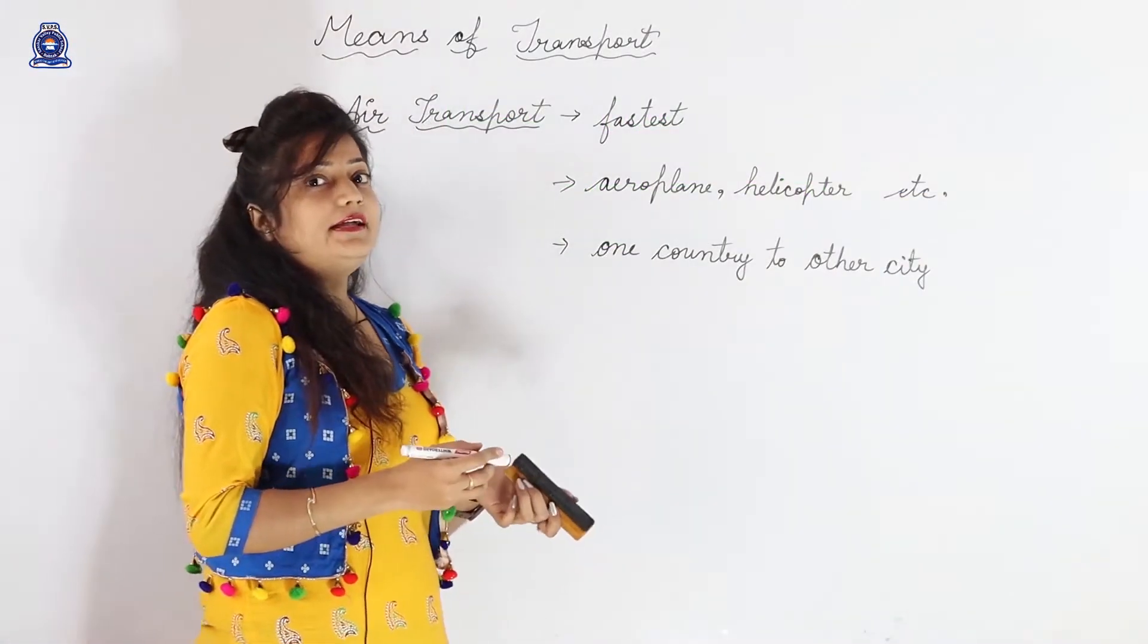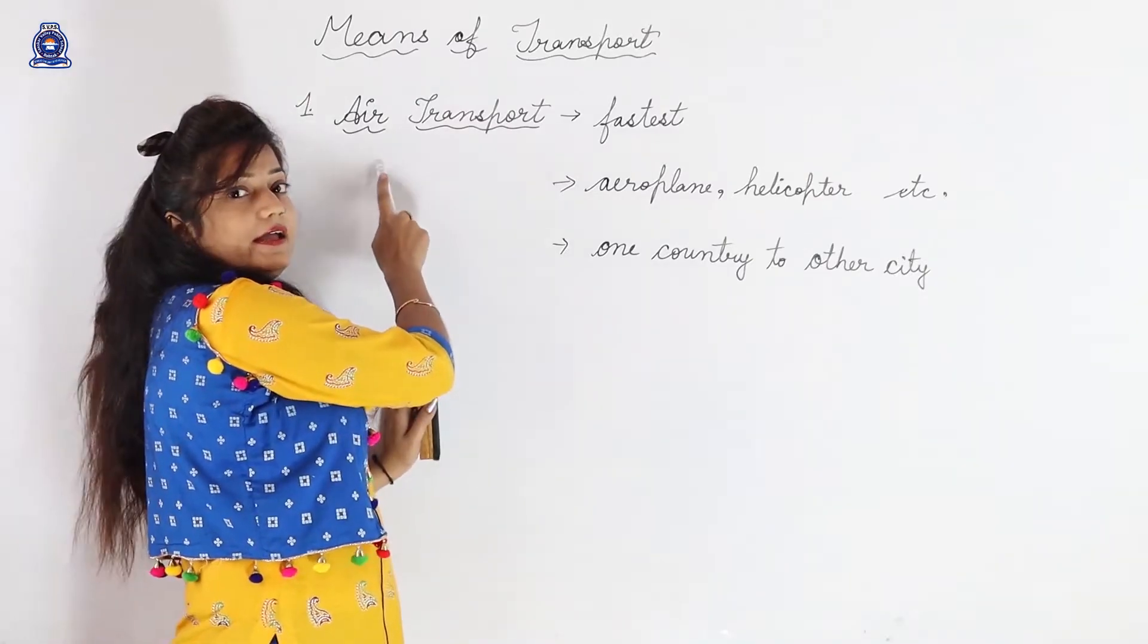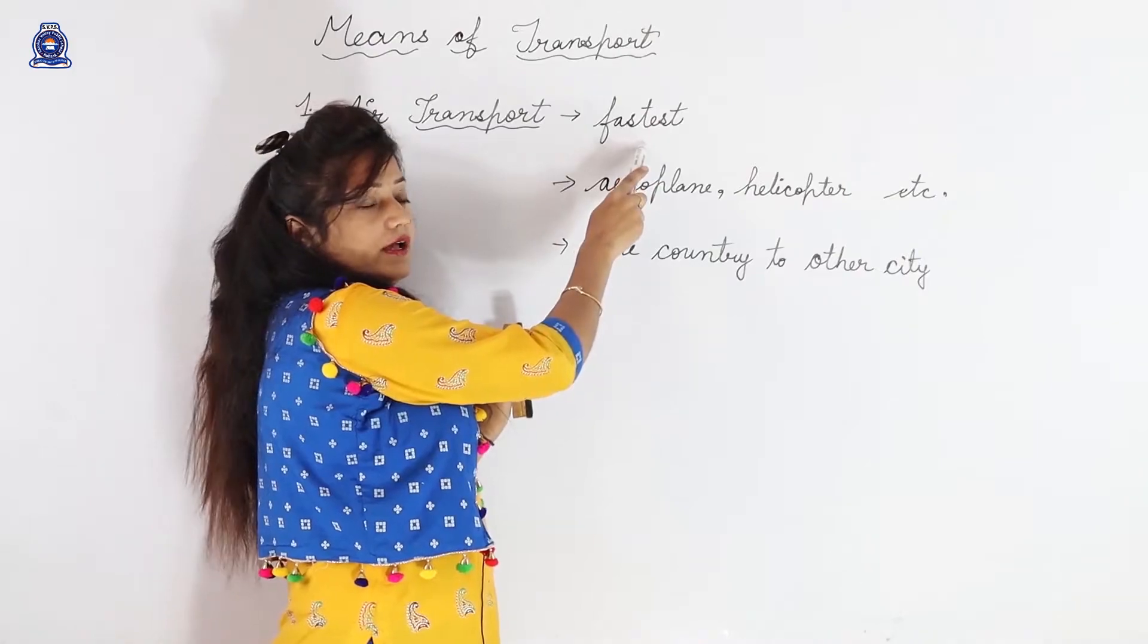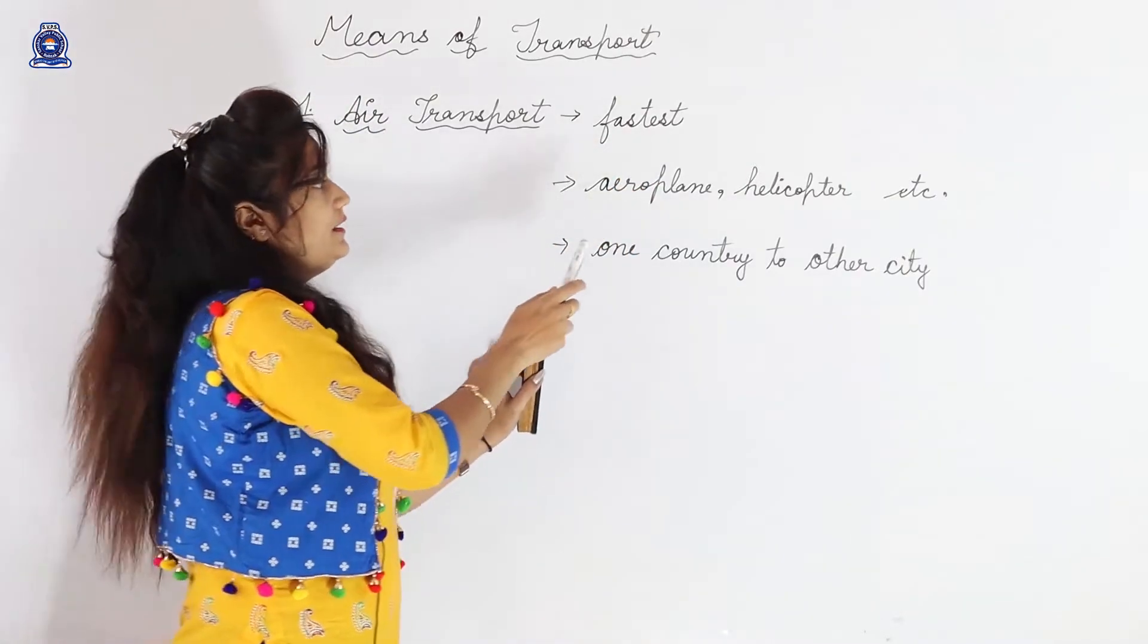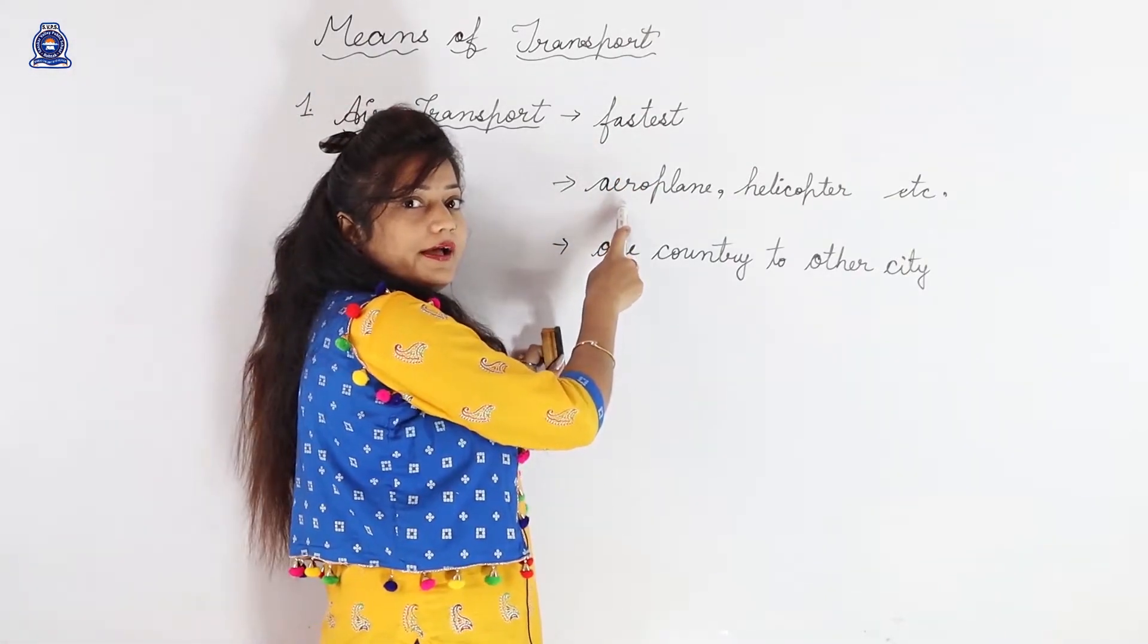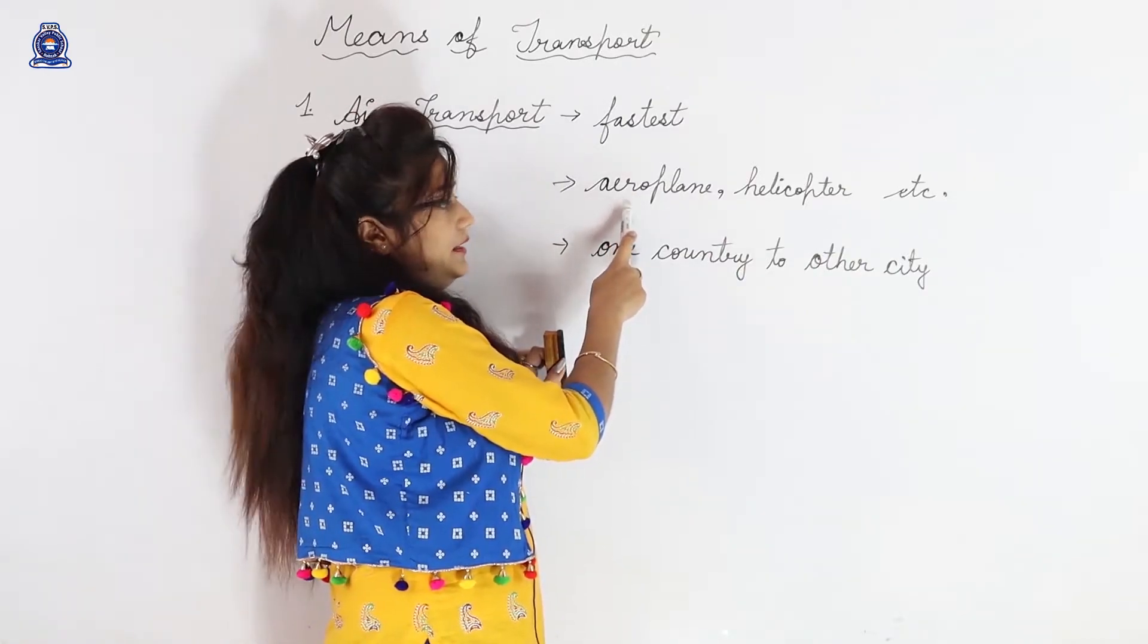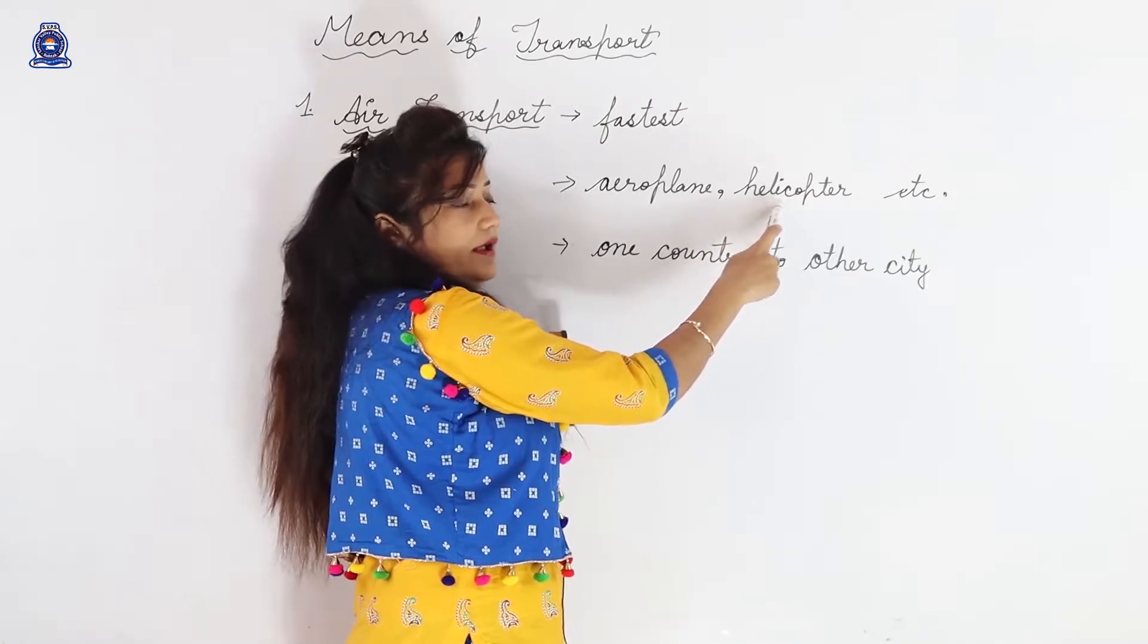The second means of transport is air transport. Air transport is the fastest means of transport. These are the examples of air transport. Aeroplane, the second is helicopter and etc.